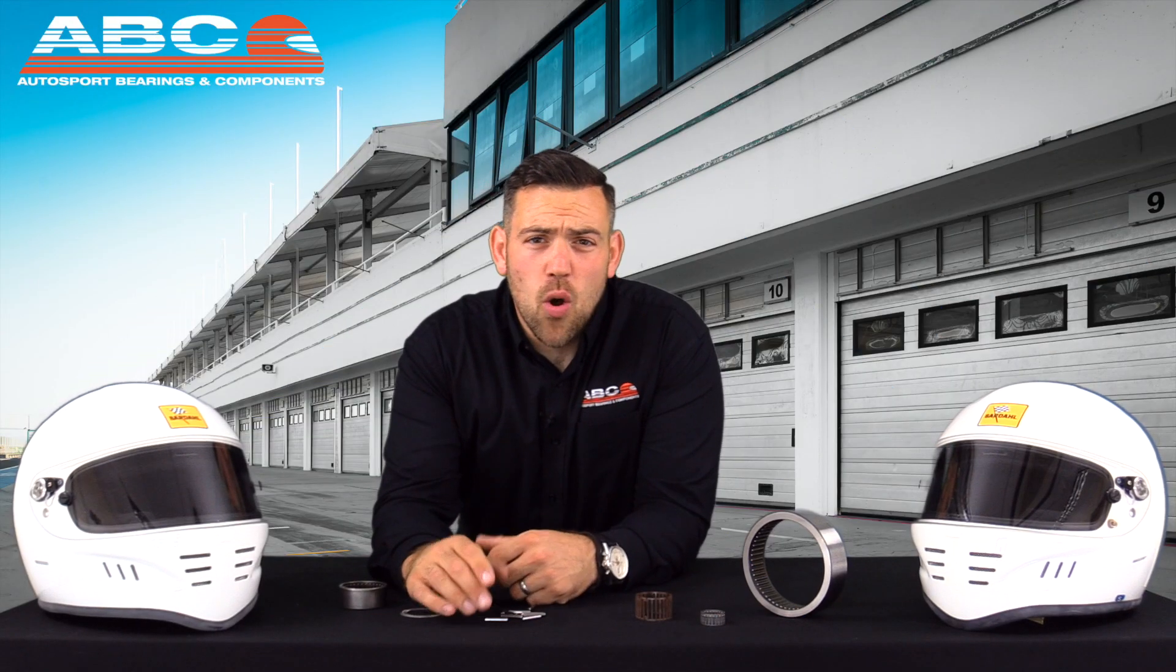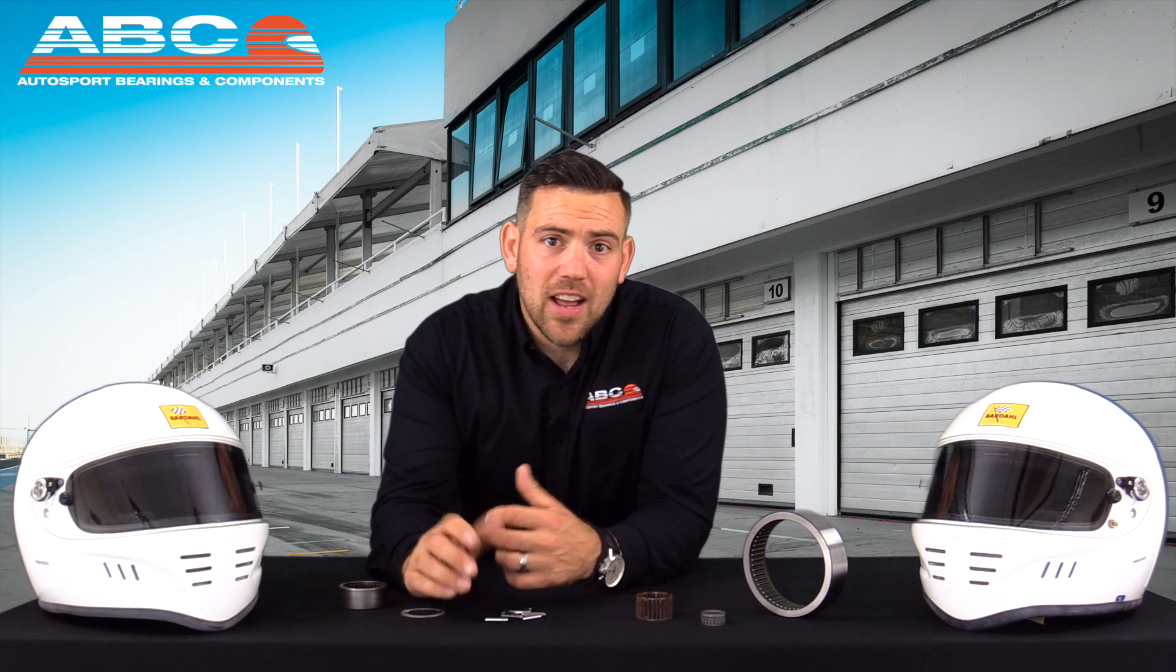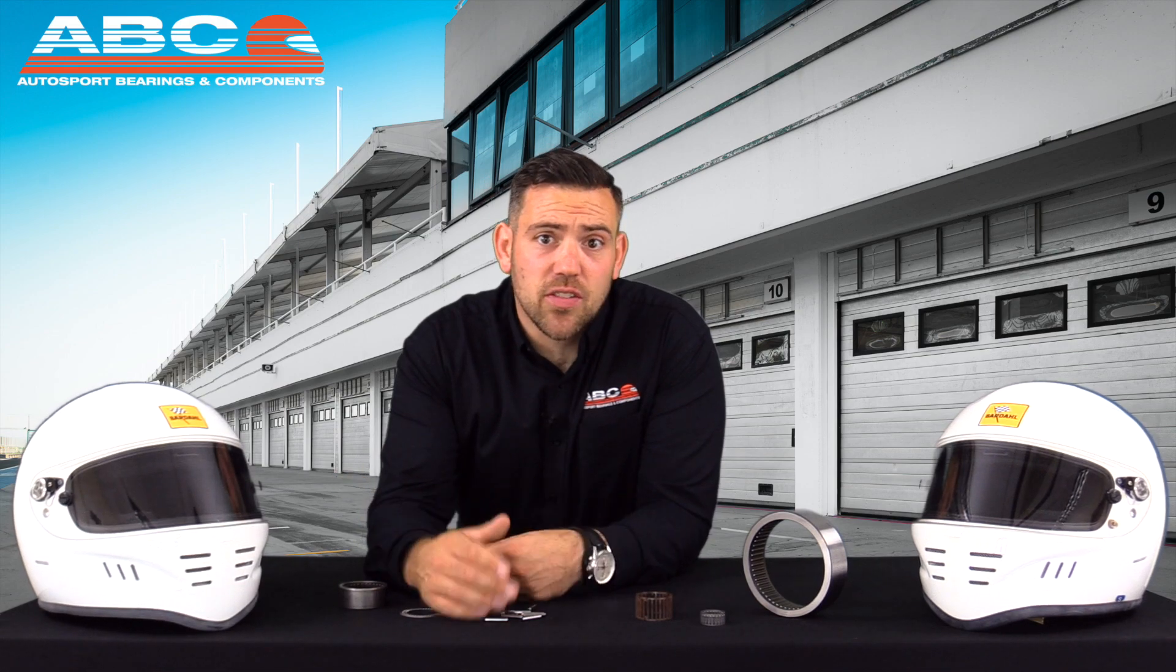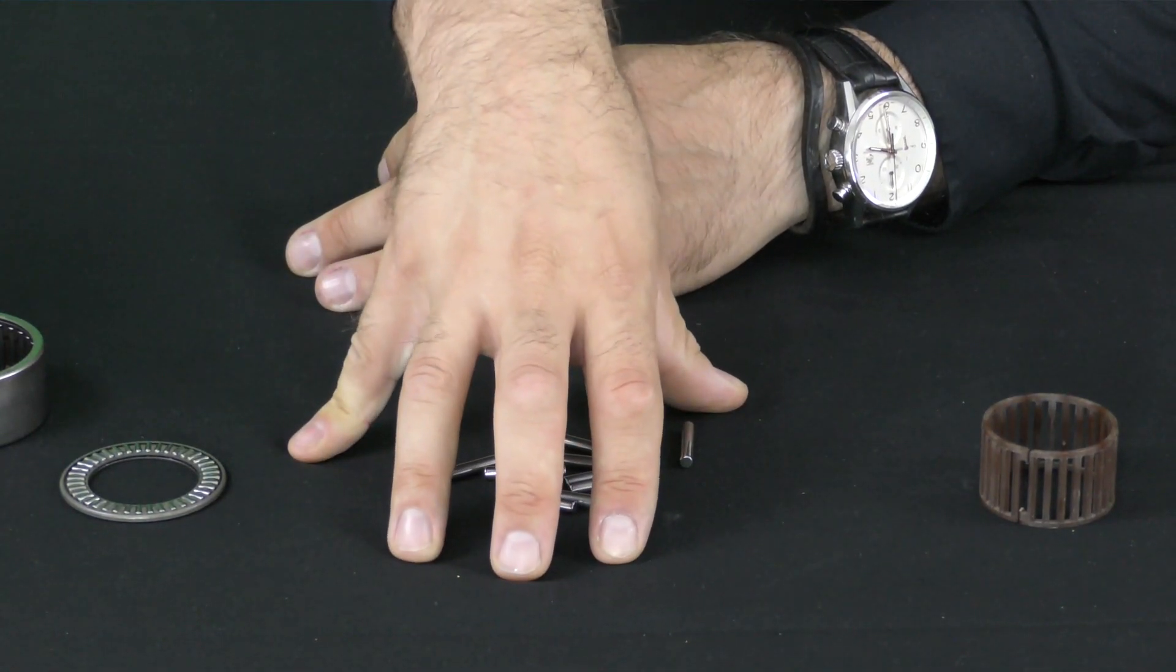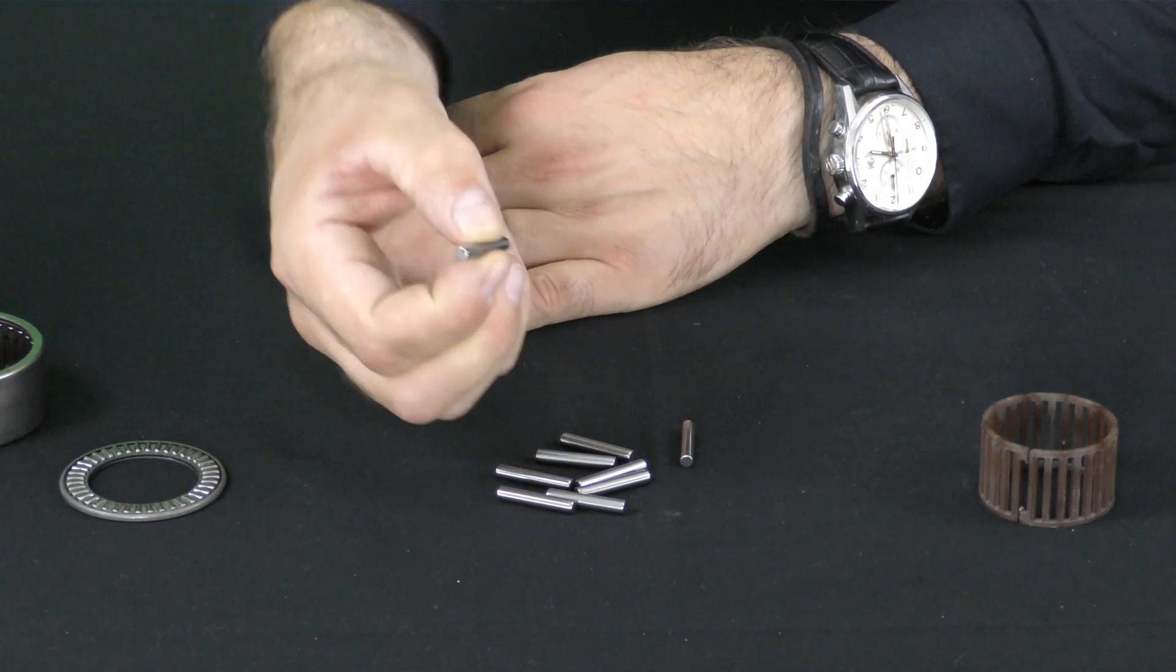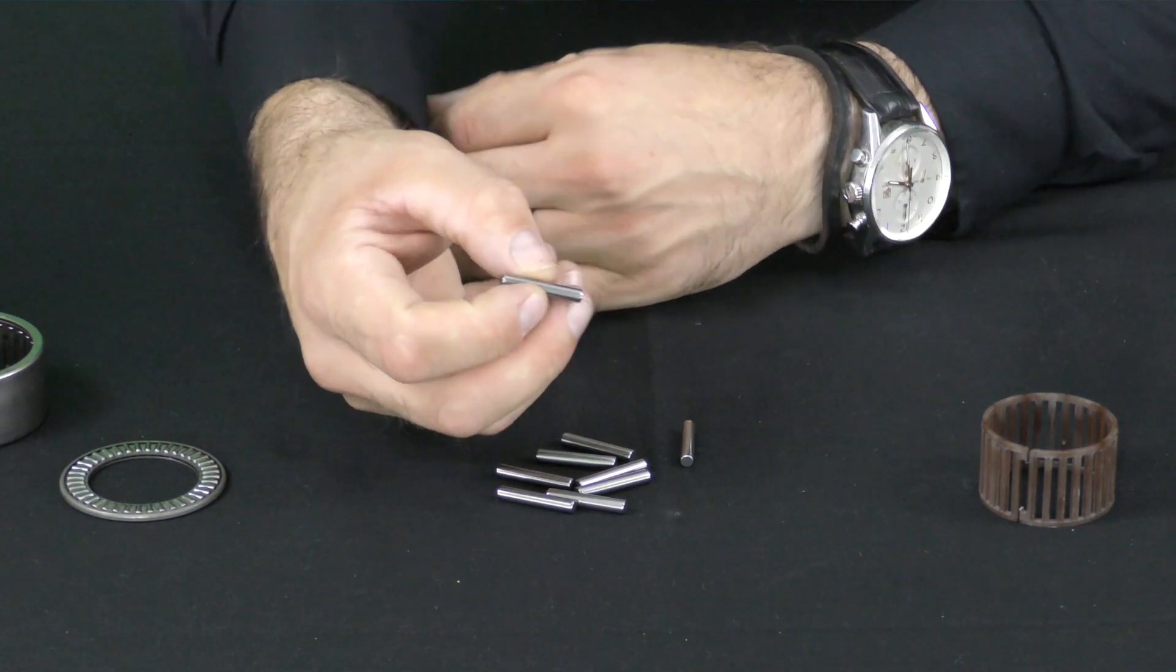So firstly, what makes up a needle roller bearing? Well, it's all to do with the rolling element, the bit that goes around and reduces the friction. So here we've got some rolling elements. These are needle rollers. What makes it a needle roller?